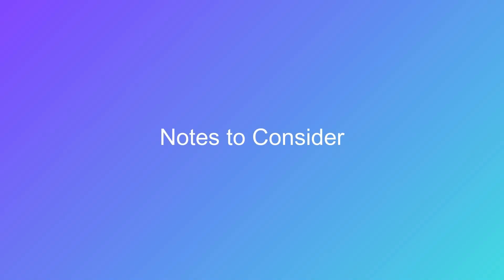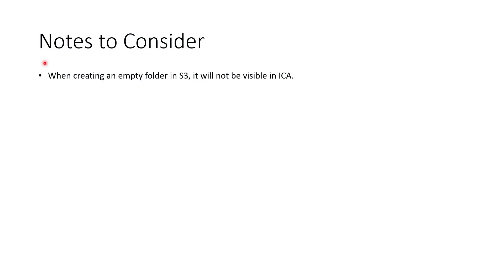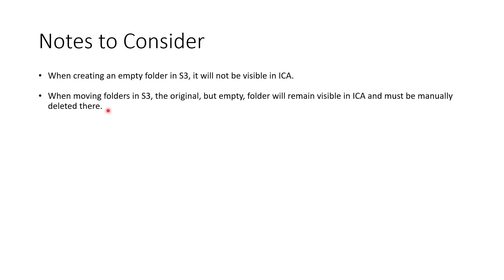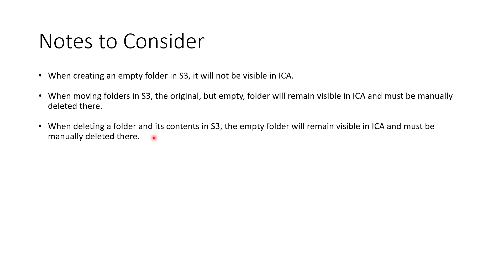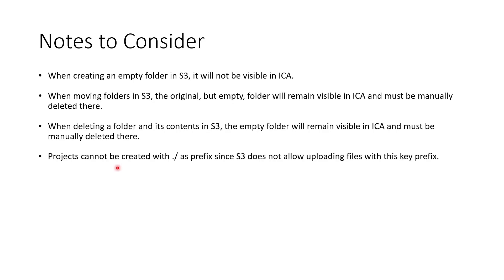Because of how Amazon S3 handles folders and does not send events for S3 folders, the following restrictions must be taken into account for ICA project data stored in S3. First, when creating an empty folder in S3, it will not be visible in ICA — files need to be added to the folder for it to be made visible. Next, when moving folders in S3, the original but empty folder will remain visible in ICA and must be manually deleted there. Similarly, when deleting a folder and its contents in S3, the empty folder will remain visible in ICA and must be manually deleted there. Additionally, projects cannot be created with a backslash as prefix, since S3 does not allow uploading files with this key prefix.